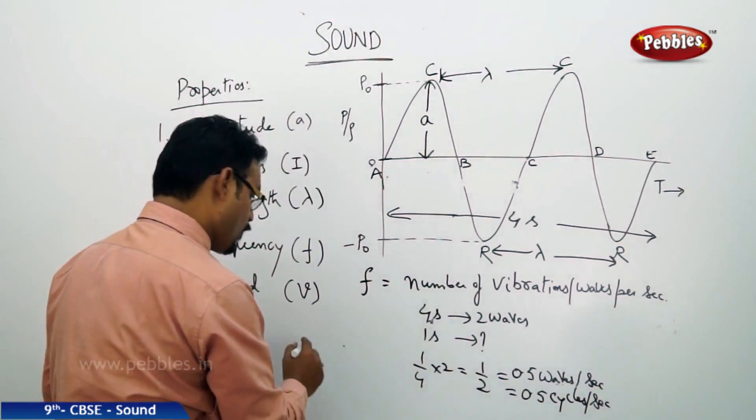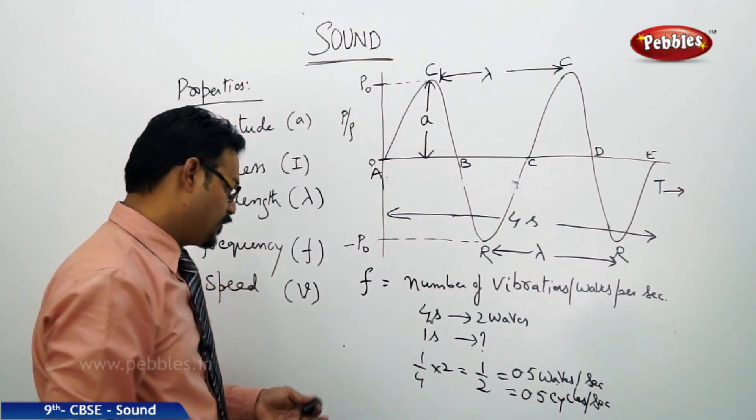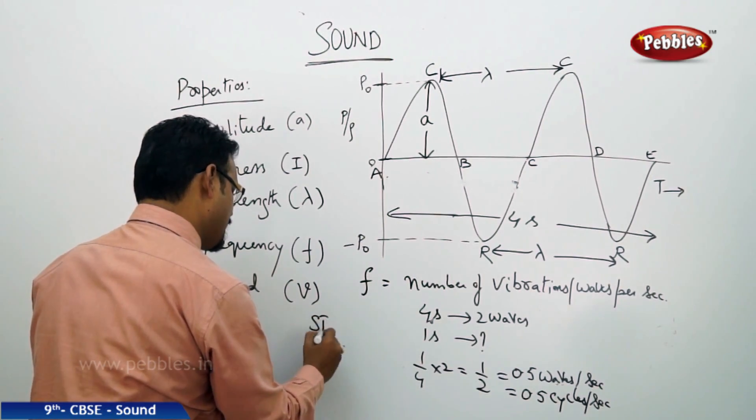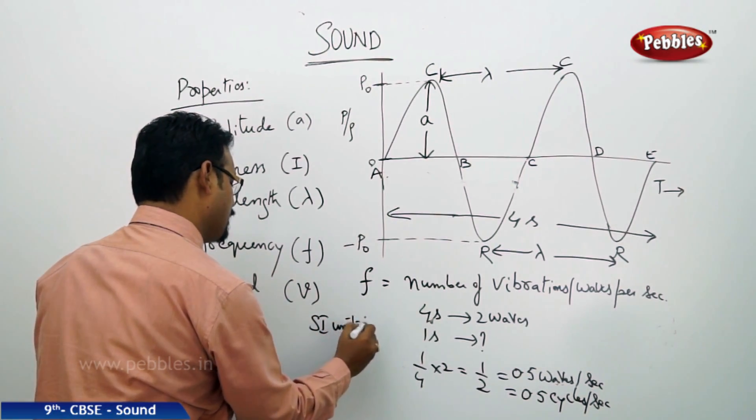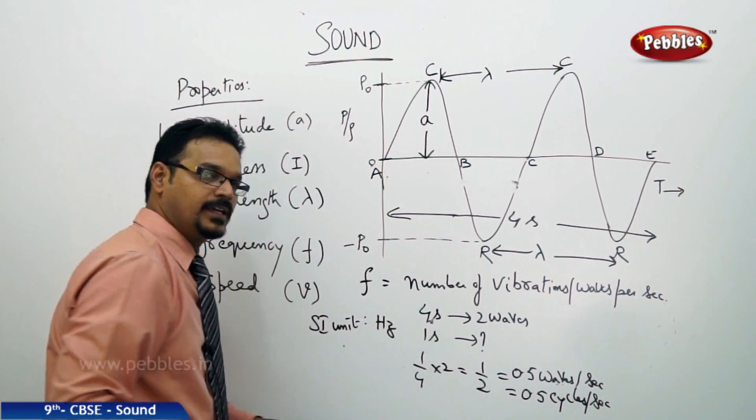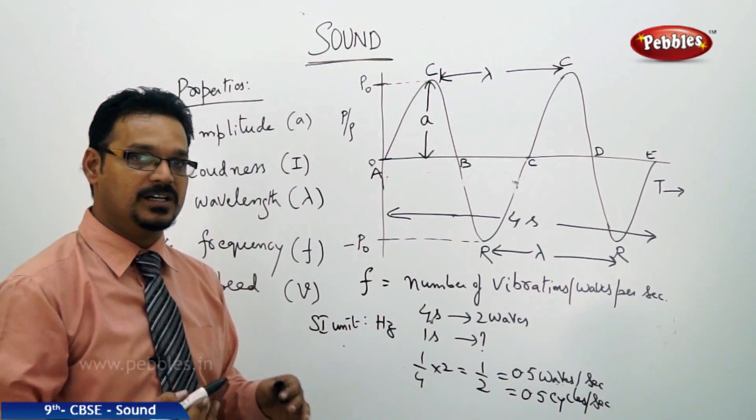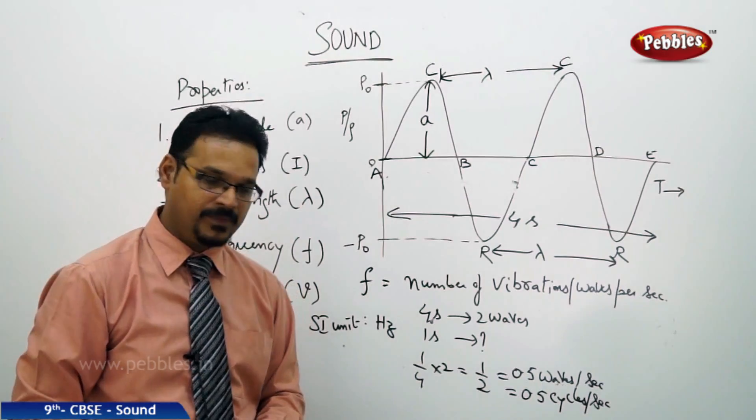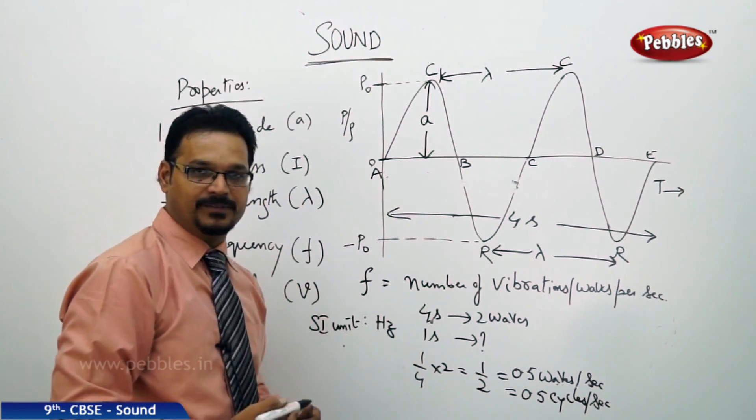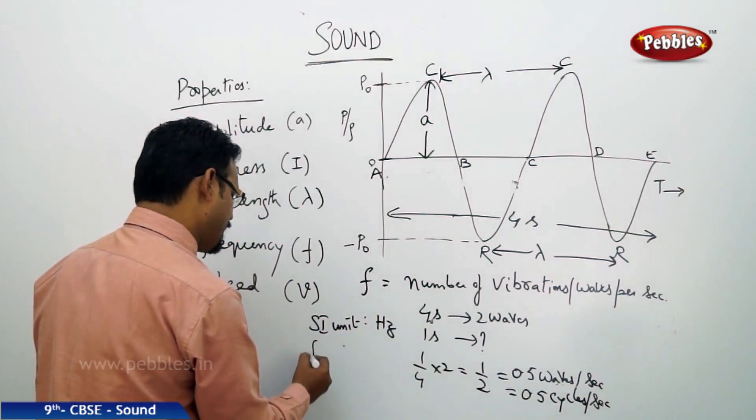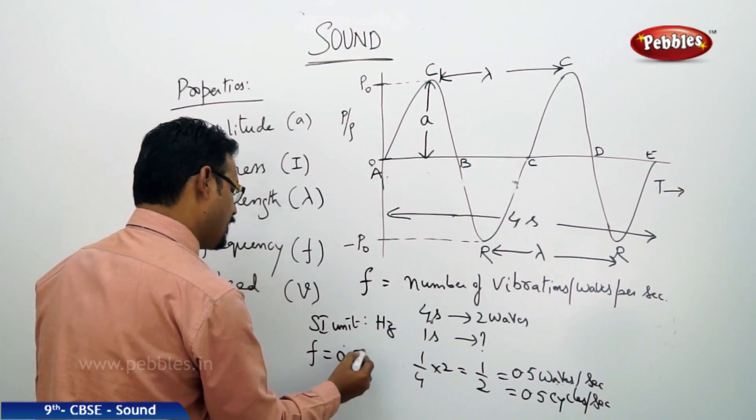Or, you can say, one more unit, which is very famous for frequency. That is actually SI unit of frequency. This is hertz. H-E-R-T-Z. Hertz. It's a scientist name. In short form, you can say, Hz. So, therefore, the value I can write, F equals to 0.5 hertz.